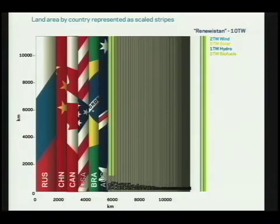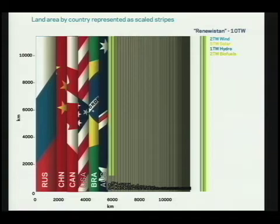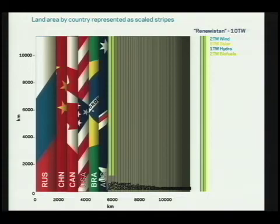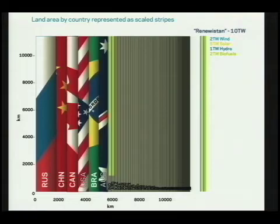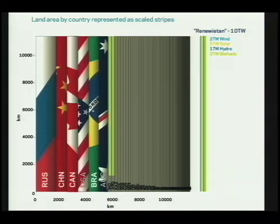I've superimposed on this map a new continent that I call Renewistan. Renewistan would be using better than the best technology for wind, solar, hydro, and biofuels at massive scale if we deployed them today. For 10 terawatts of Renewistan, it would be the seventh largest country in the world — it would be a continent. And that's with the average person in the world using 2.2 kilowatts. If everyone in the world used as much power as me, it would be eight times that size — you'd cover nearly all of the major land masses with solar cells, wind power, and hydro.